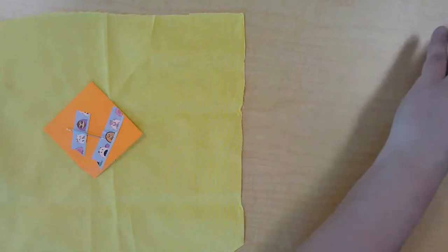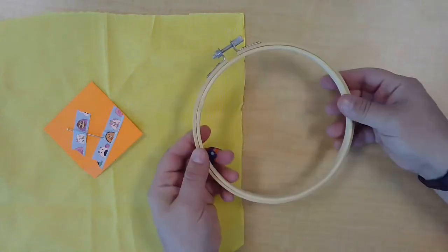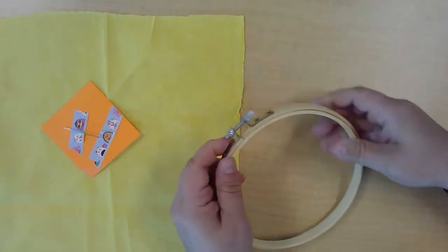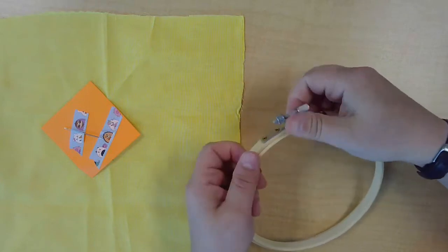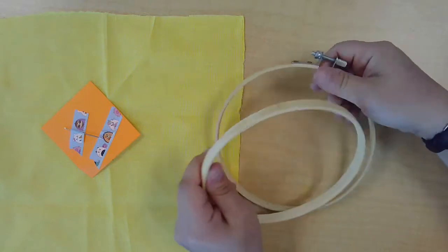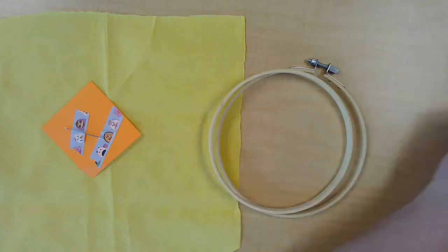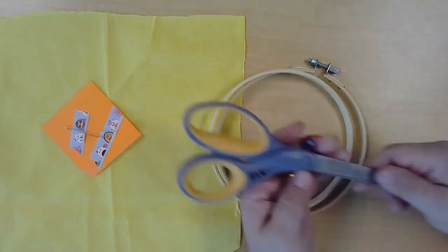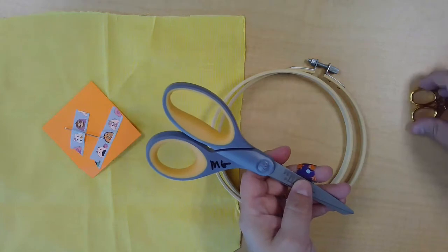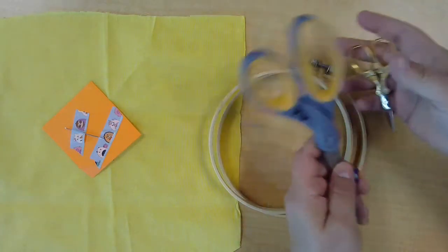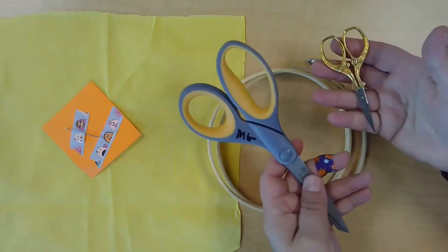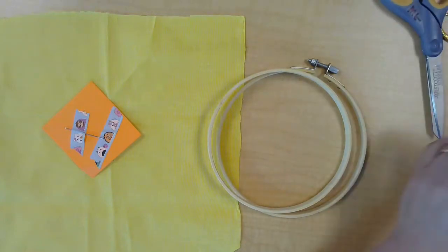As you get better at embroidery you might want to invest in smaller needles if you do finer stuff. Your hoop loosens and tightens with the screw up top here, and you pull out the center like that, and the fabric goes in between that and the outer rim. You can use any kind of scissors. They sell fancy scissors, but plain scissors are fine too.